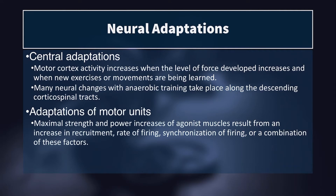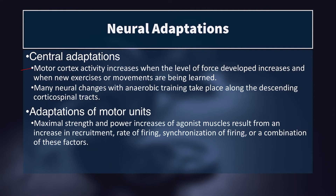Central adaptations to the nervous system include increases in motor cortex activity. Motor cortex activity increases when the level of force developed increases and when new exercises or movements are being learned. For example, going from a goblet squat to a barbell back squat increases force output and drives greater motor cortex activation. Similarly, learning a new exercise — even a familiar movement pattern — increases motor cortex activity as you acquire that new skill. There are also changes such as strengthening of synapses and myelination of axons in the descending corticospinal tracts.